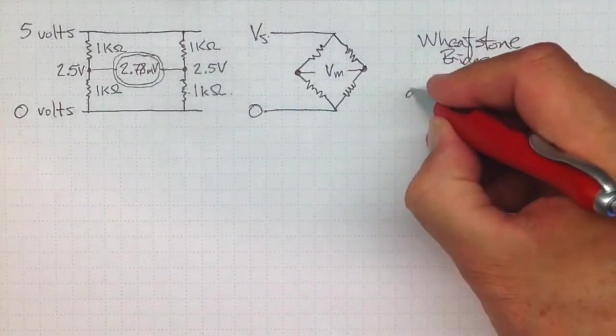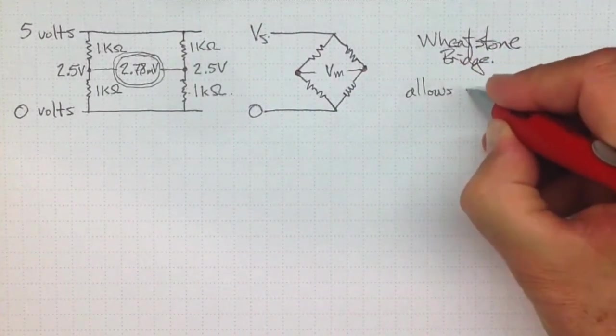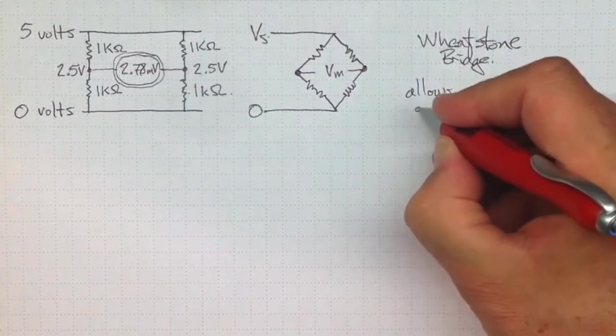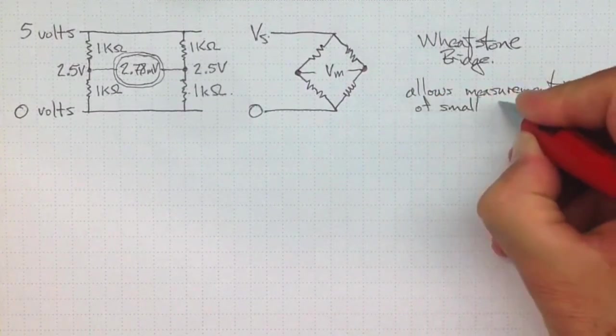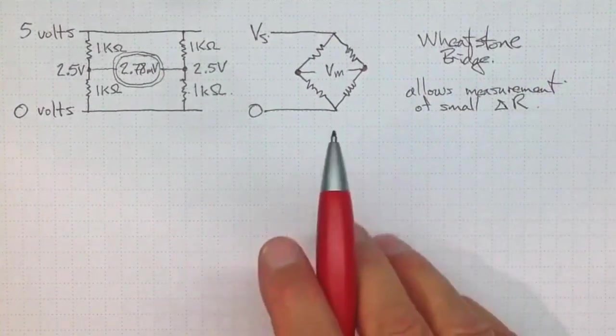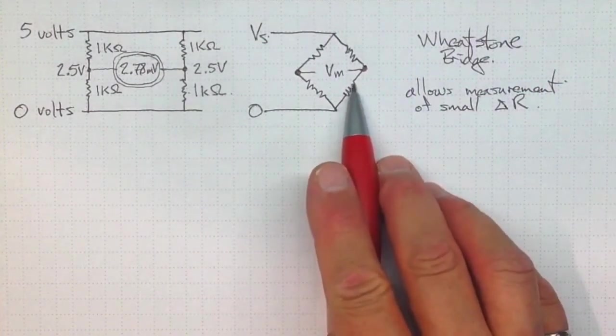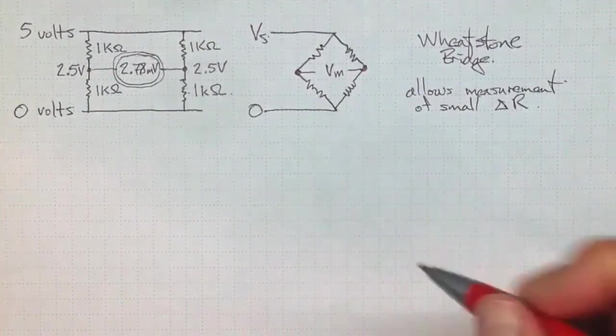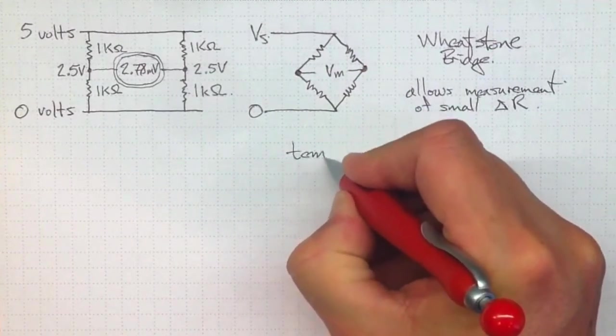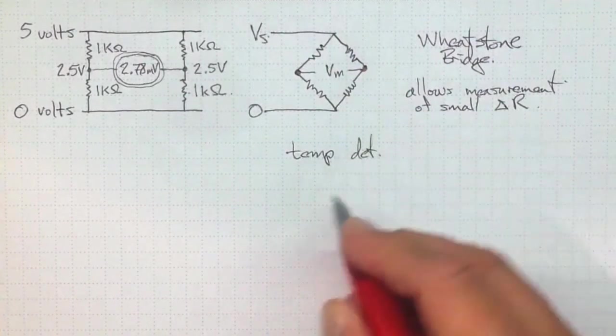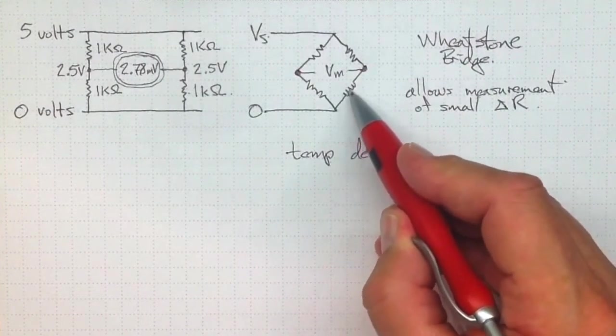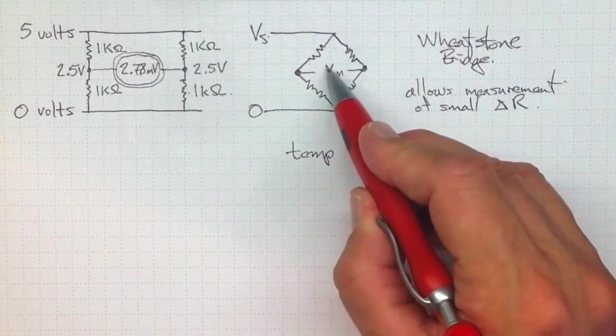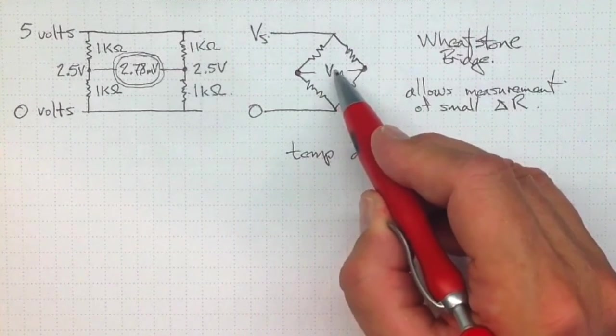So, Wheatstone Bridge allows measurement of very small changes in resistance. And that can be advantageous because there are a lot of things that change resistance with temperature, or with the stress state that are on them. So, for instance, we can have temperature detectors, that although the small resistance change will be very small, too small to measure just as a resistance, when we put it in a Wheatstone Bridge, we can measure that small change through that small voltage there.